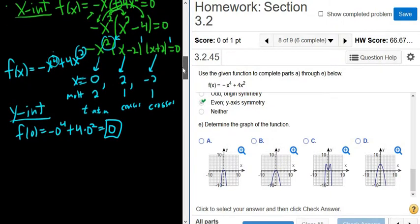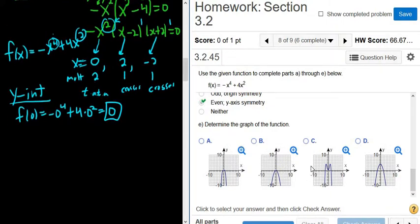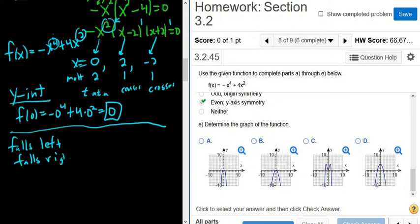We definitely don't want to get this wrong. Okay, so what do we have? Let's recap what we have. We have our end behavior, and that was falls left, falls right. That was our end behavior. We have our intercepts. They're right here. Okay, based off that, we should be able to do it. So we'll use a different color. Let's try yellow.